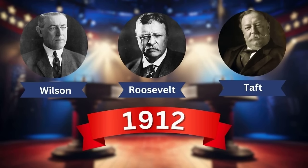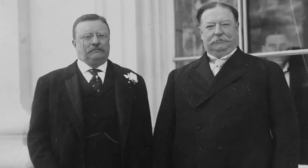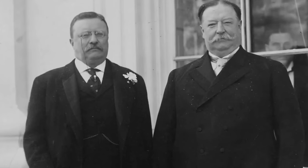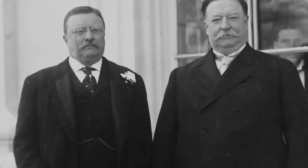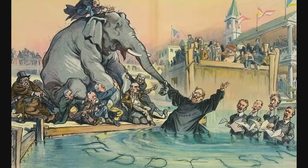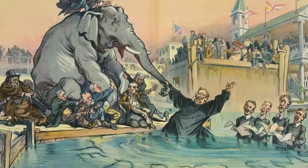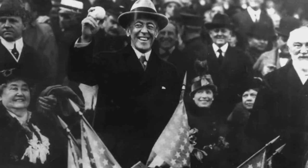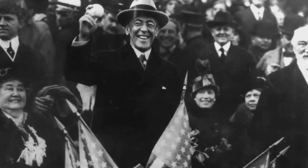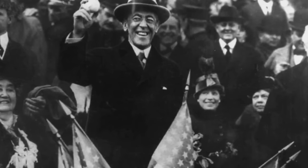1912: Woodrow Wilson vs. Theodore Roosevelt vs. William H. Taft. The 1912 election was uniquely characterised by a three-way contest involving incumbent President William Taft, former President Theodore Roosevelt, and Woodrow Wilson. Roosevelt's break from the Republican Party to form the Progressive, or Bull Moose, Party split the Republican vote, paving the way for Wilson's victory. This dramatic election demonstrated the significant impact third-party candidates can have on American political dynamics, reshaping future electoral strategies.